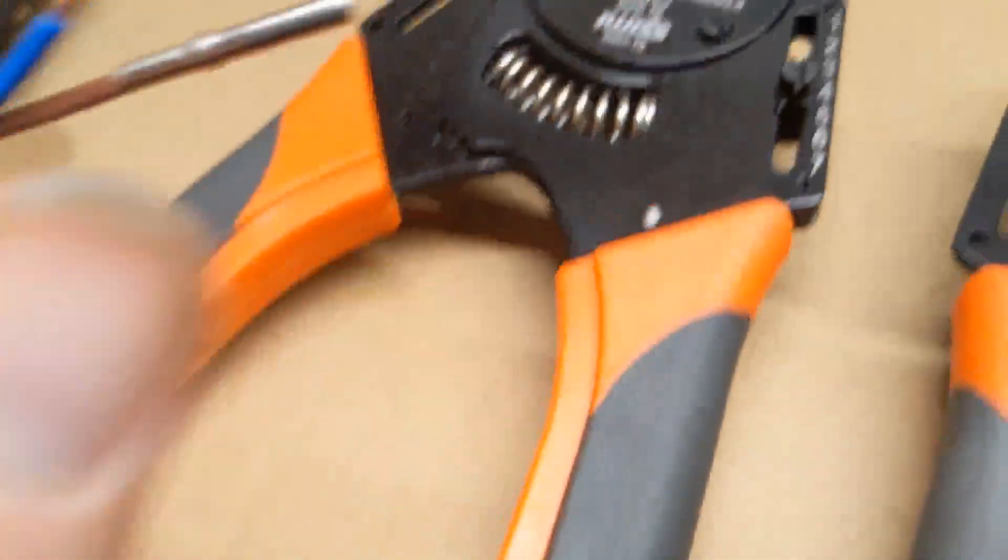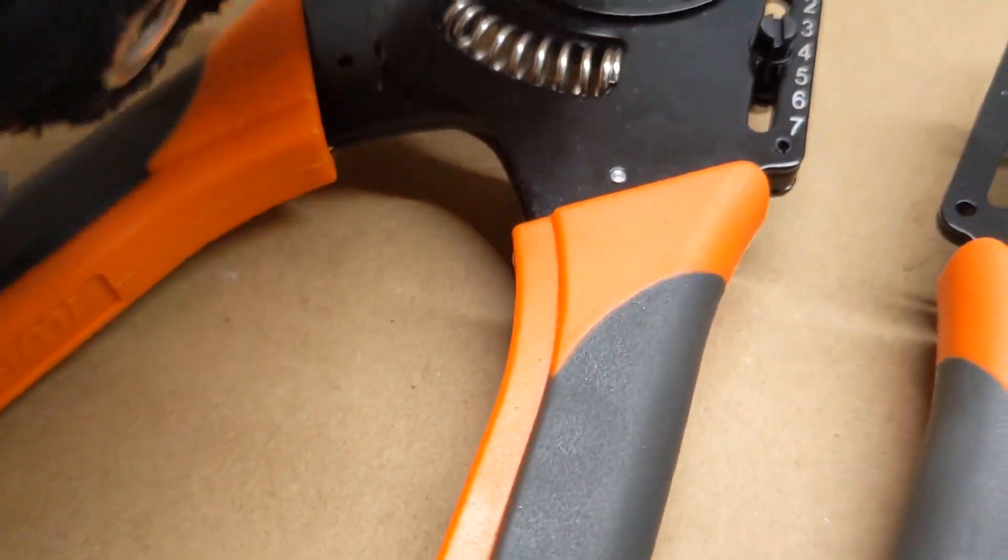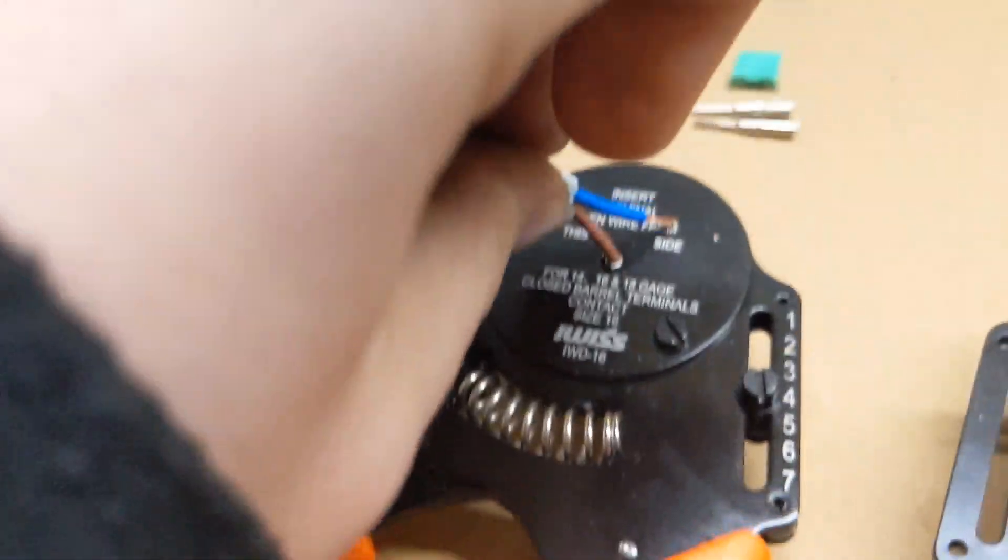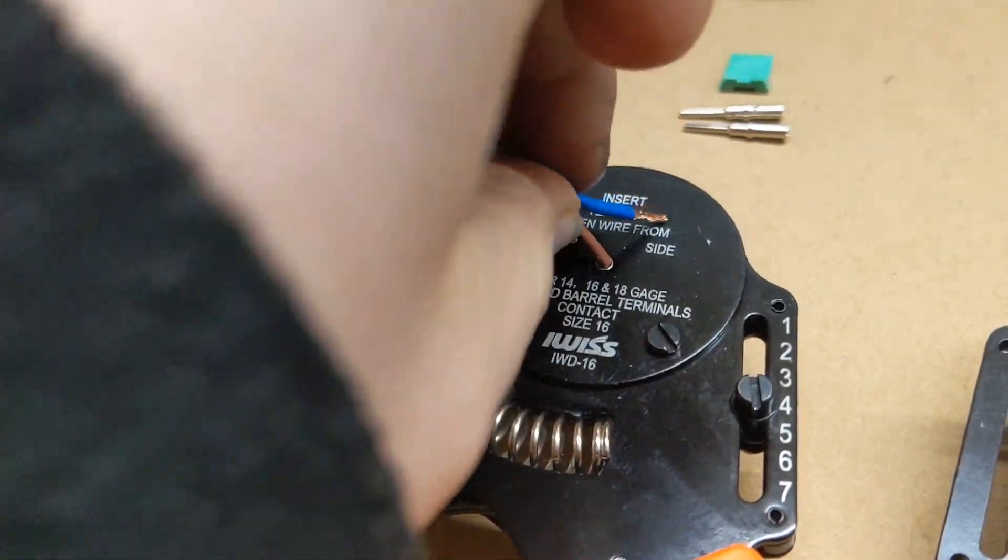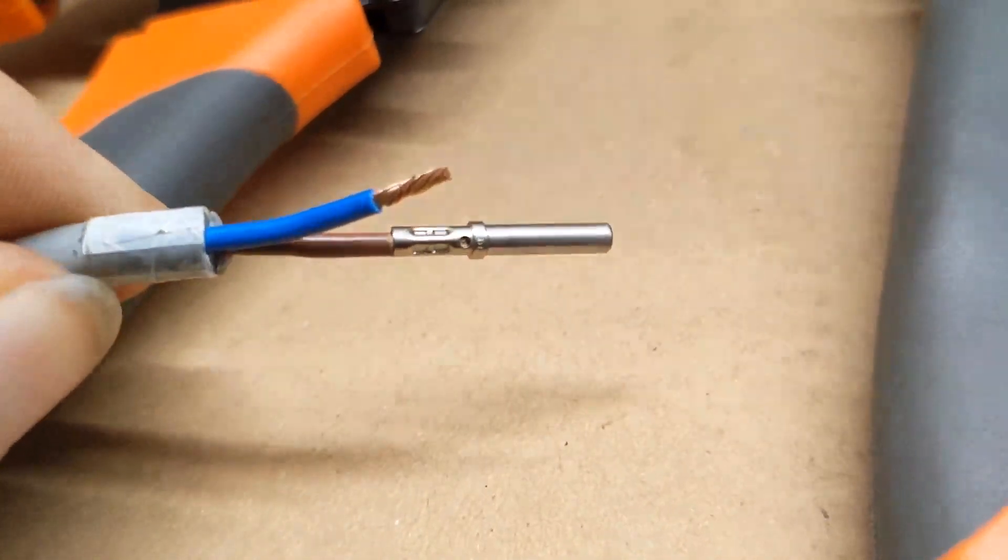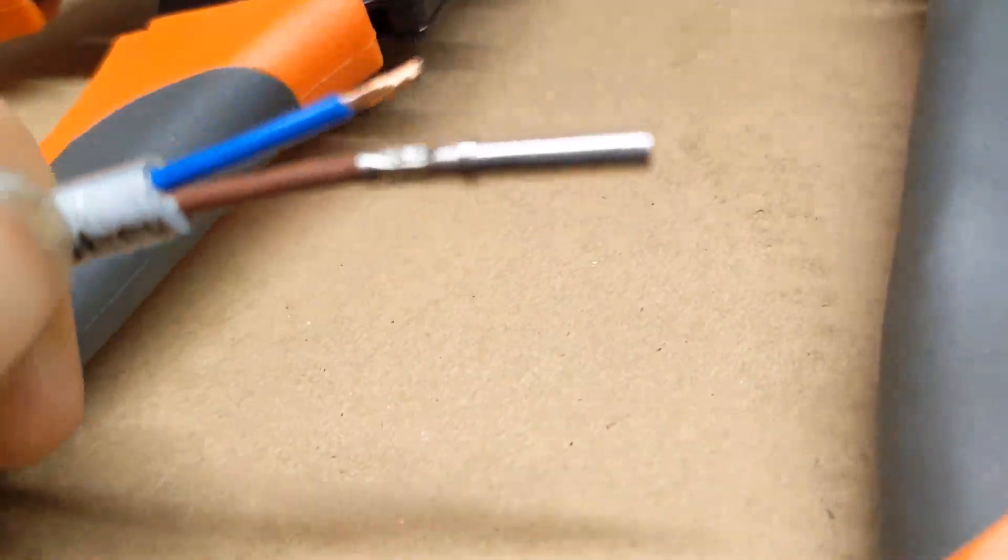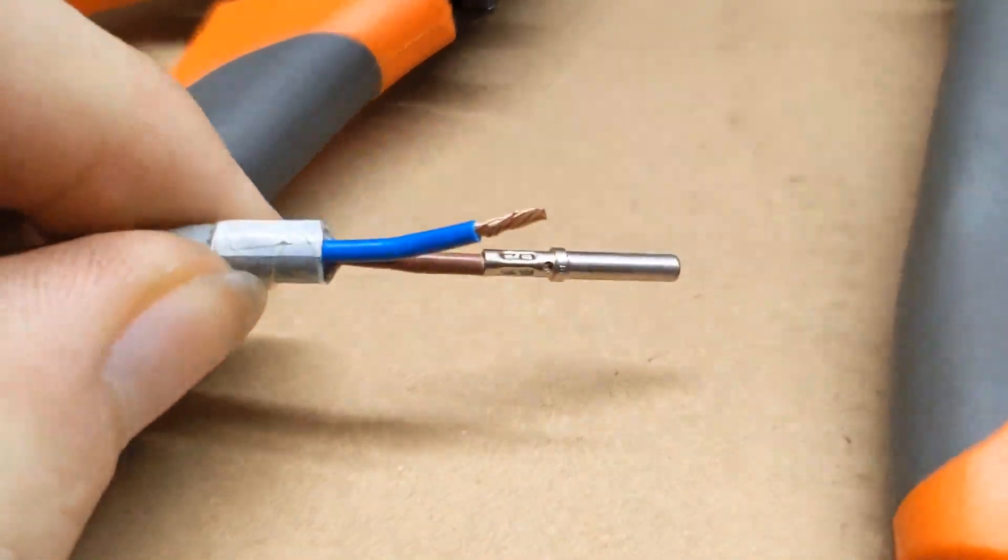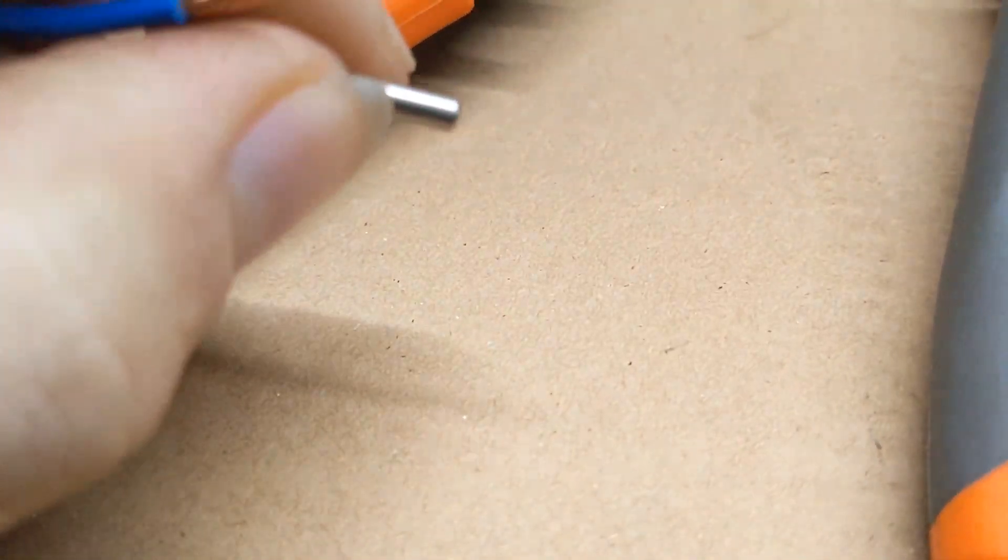So what we're going to do is open up the crimping tool. We're going to push the connector in, and with this particular crimping tool it holds the connector in the right place and all you do is squeeze it together. Now just look at the crimping tool and you can see it's put them lovely indents in, which now means the connector is on nice and tight.